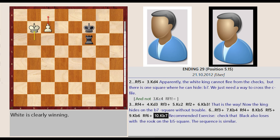Recommended exercise. Check that black also loses with the rook on the b5 square. The sequence is similar.